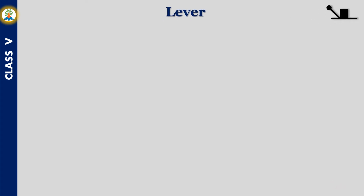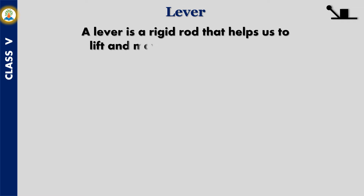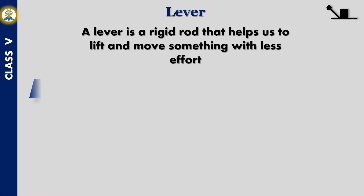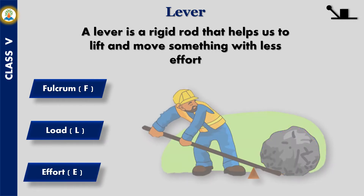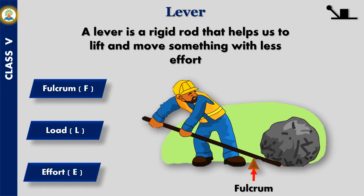A lever is a rigid rod that helps us to lift and move something with less effort. A lever has three main parts: the fulcrum, which is the point of support around which the rod moves; the load; and the effort.